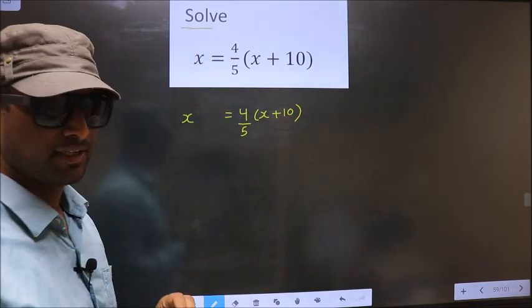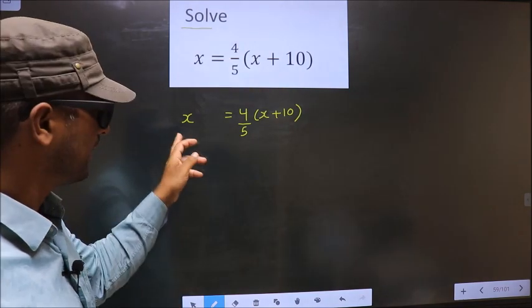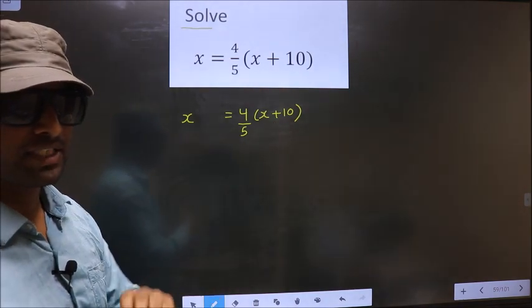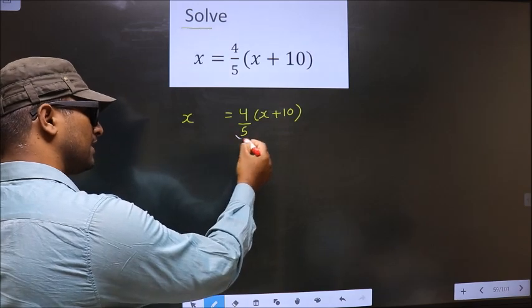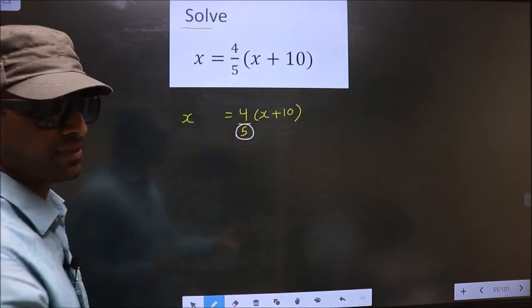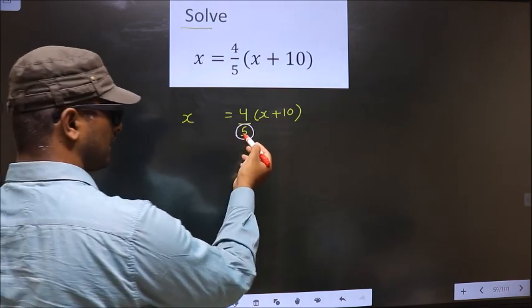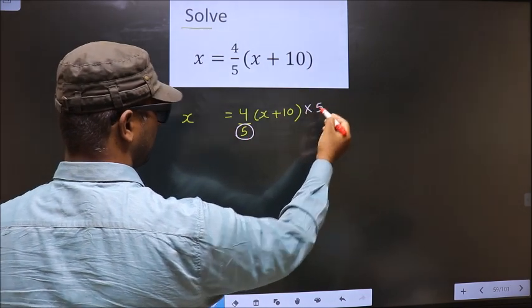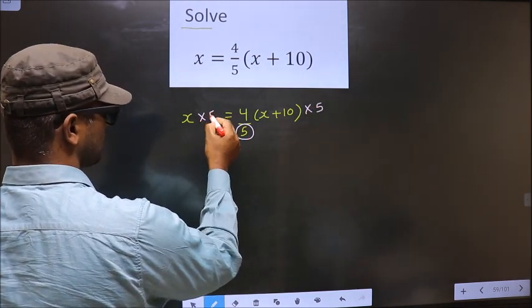In this equation, first we should get rid of the denominator, that is 5. To get rid of this denominator 5, we should multiply by 5 on both sides.